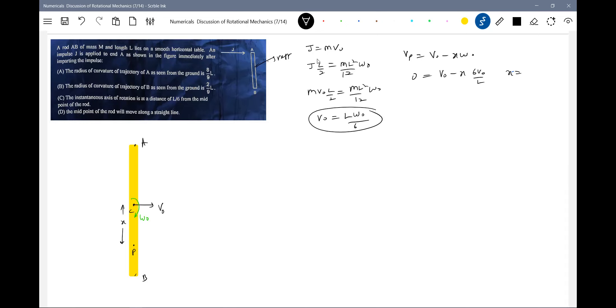So v_naught is omega naught - omega naught will be 6 v_naught by l. Therefore x is equal to l by 6. So there is a point on a rod where at that instant velocity will be zero. Therefore point p is what? Instantaneous center.